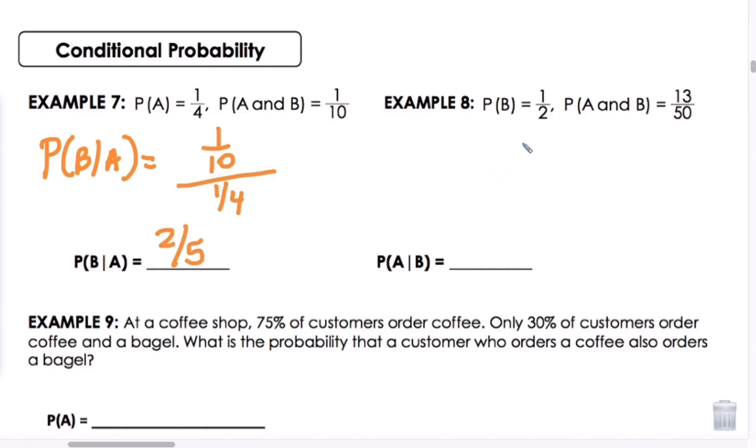In example 8, we're given P of B and P of A and B, so we know we can find P of A if B occurred by having 13 over 50 divided by 1 half, which will give us 13 fifteenths.